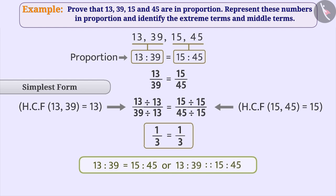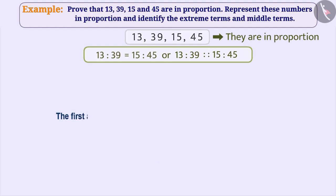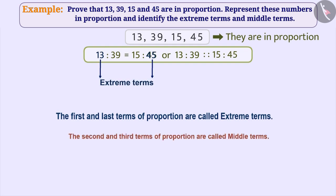Or, 13 is to 39 is proportionate to 15 is to 45. Thus, we say that 13, 39, 15 and 45 are in proportion. Out of the four terms of a proportion, the first and last terms are called extreme terms. Among the given terms, 13 and 45 are extreme terms. Similarly, the second and third terms are called middle terms. Among the given terms, 39 and 15 are middle terms.